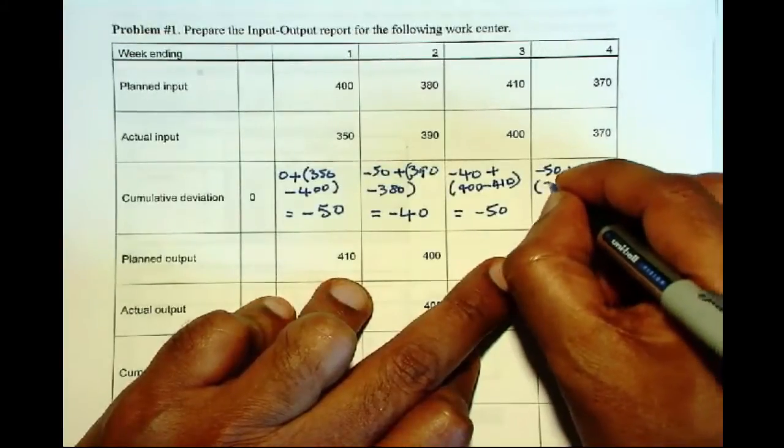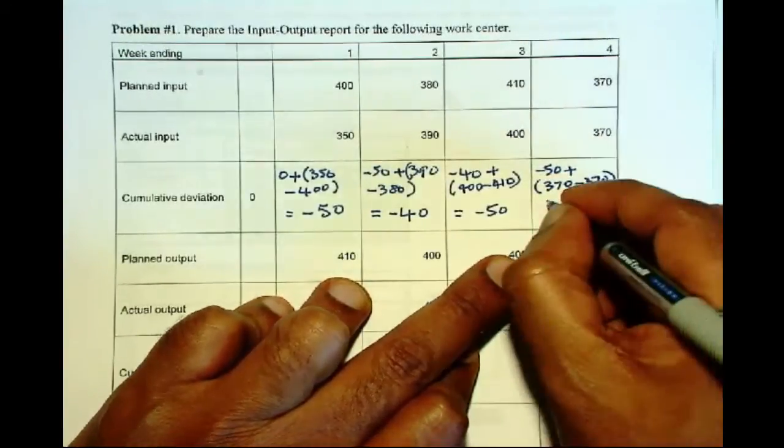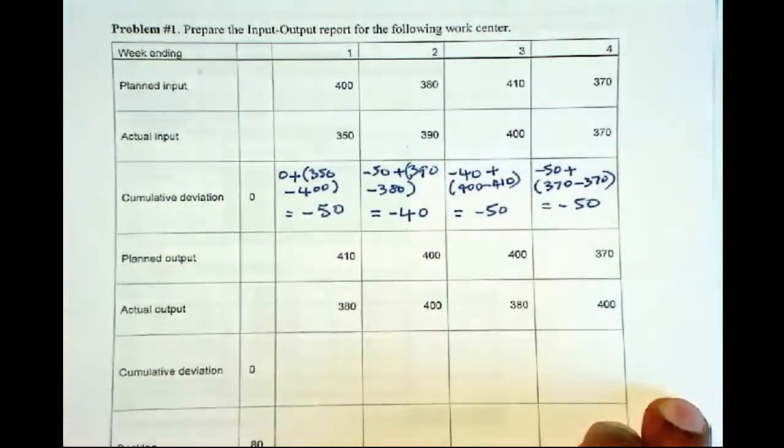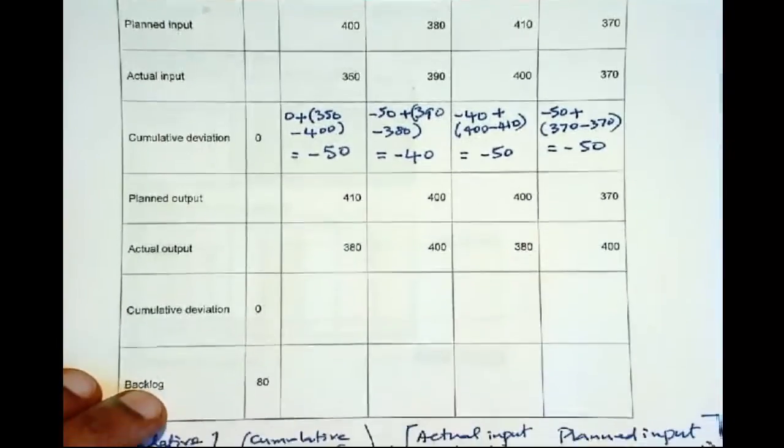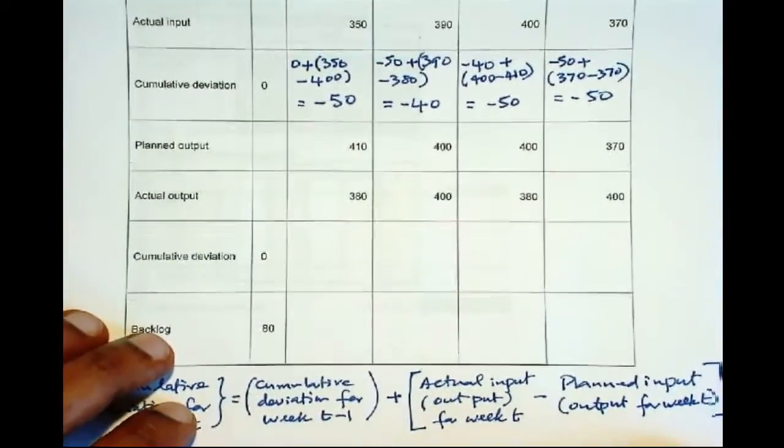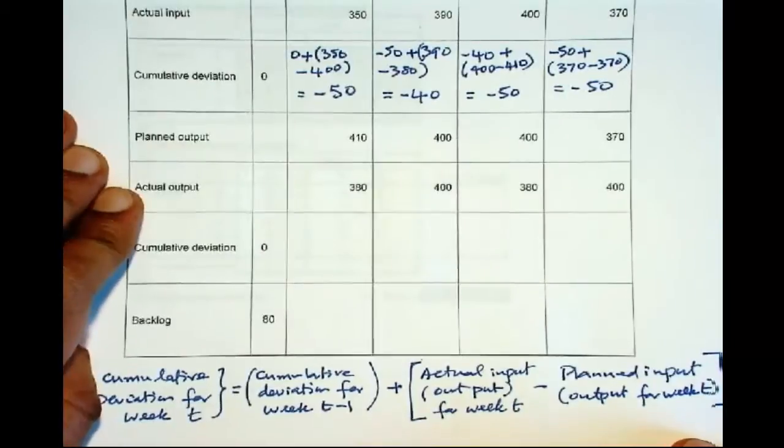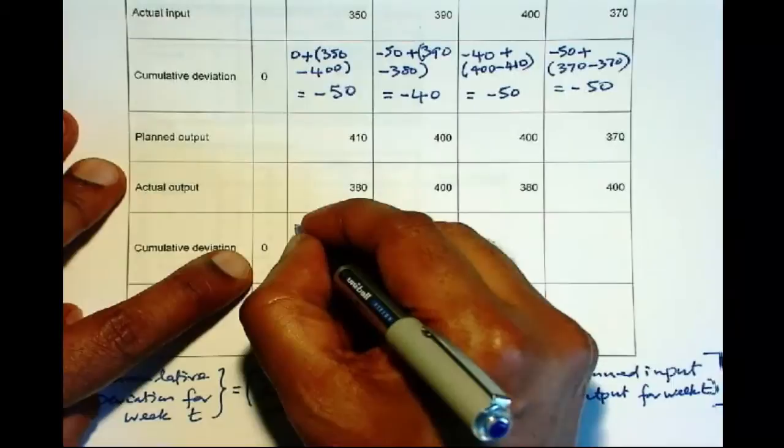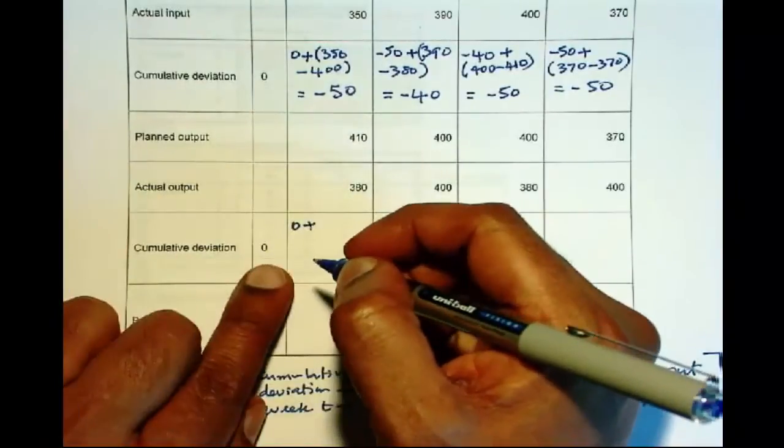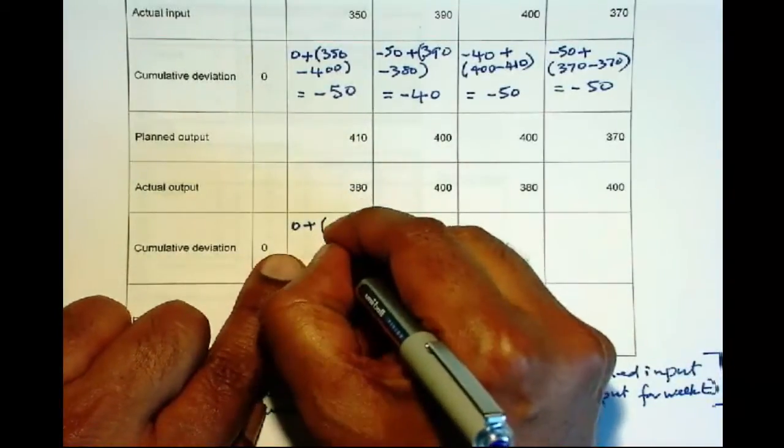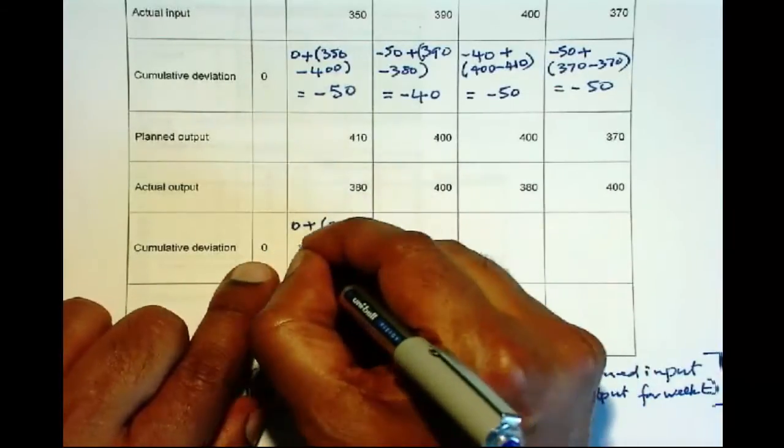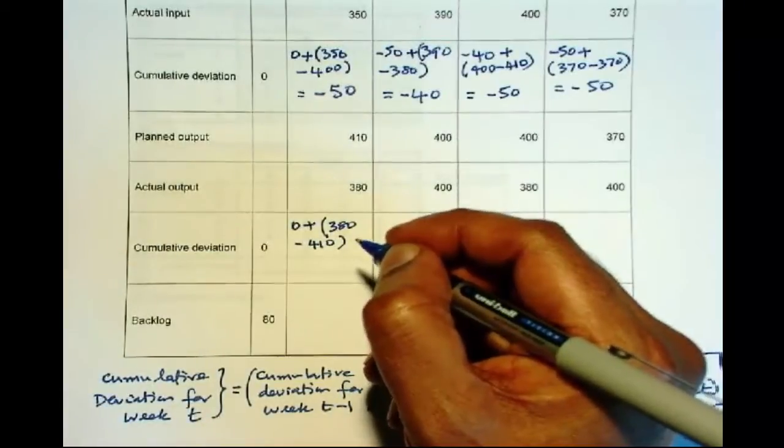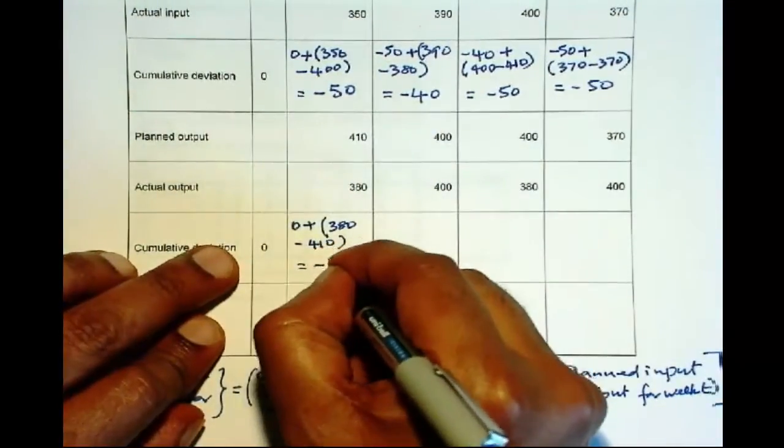So you plot this and then you can see how the planned input versus the actual input is performing over time. We do the same thing for output. So we start with 0, previous cumulative deviation, plus the actual output, minus the planned output.